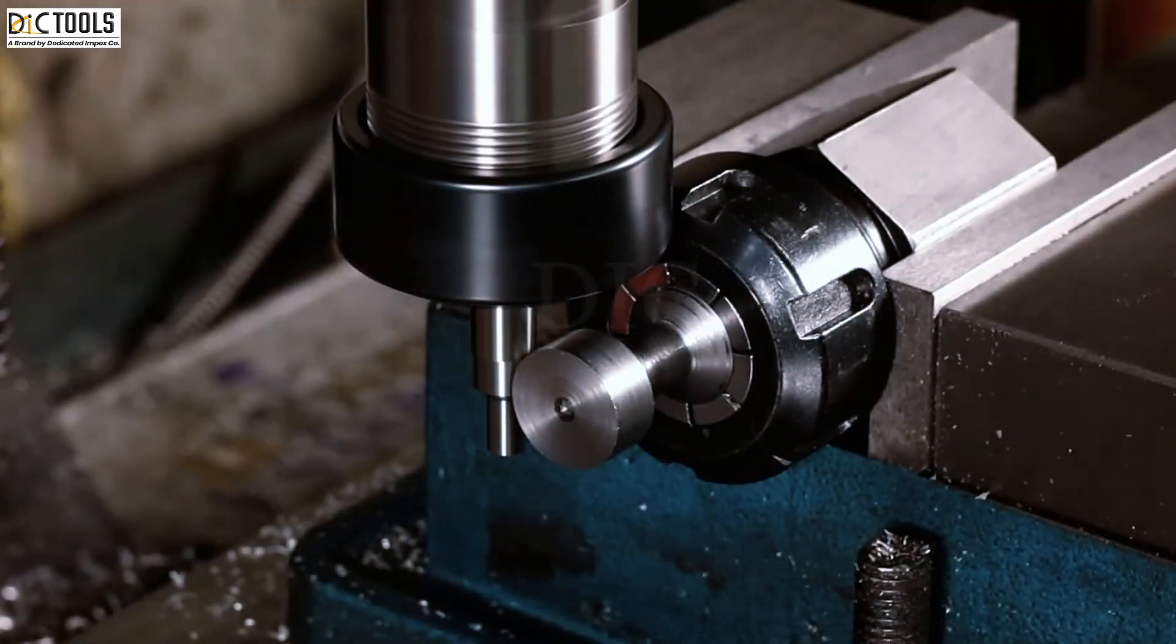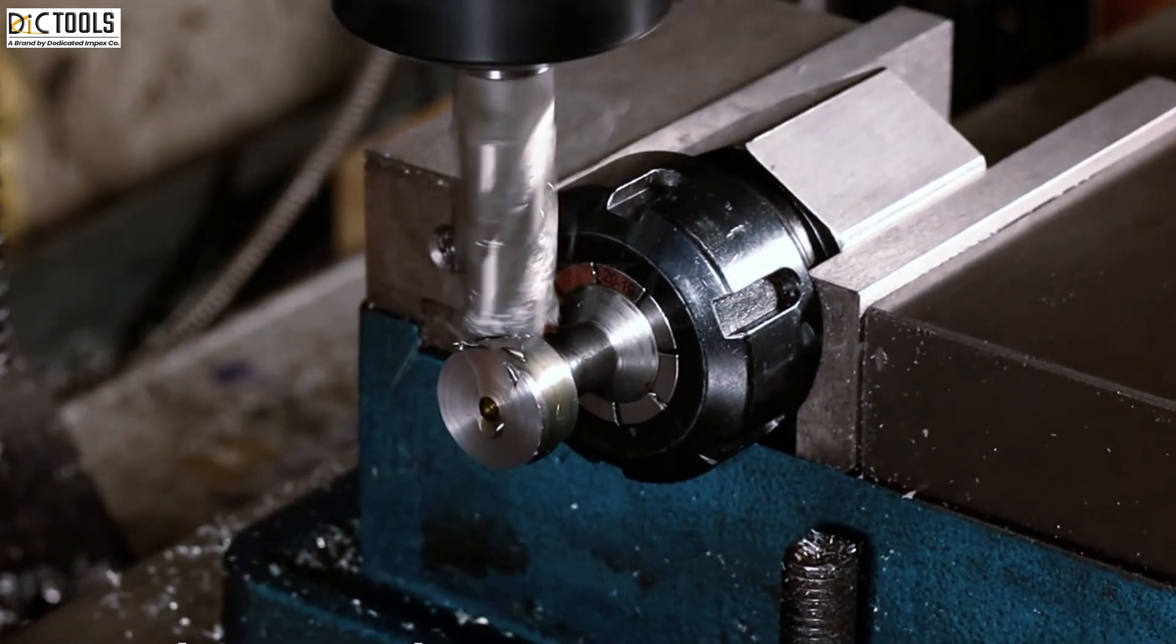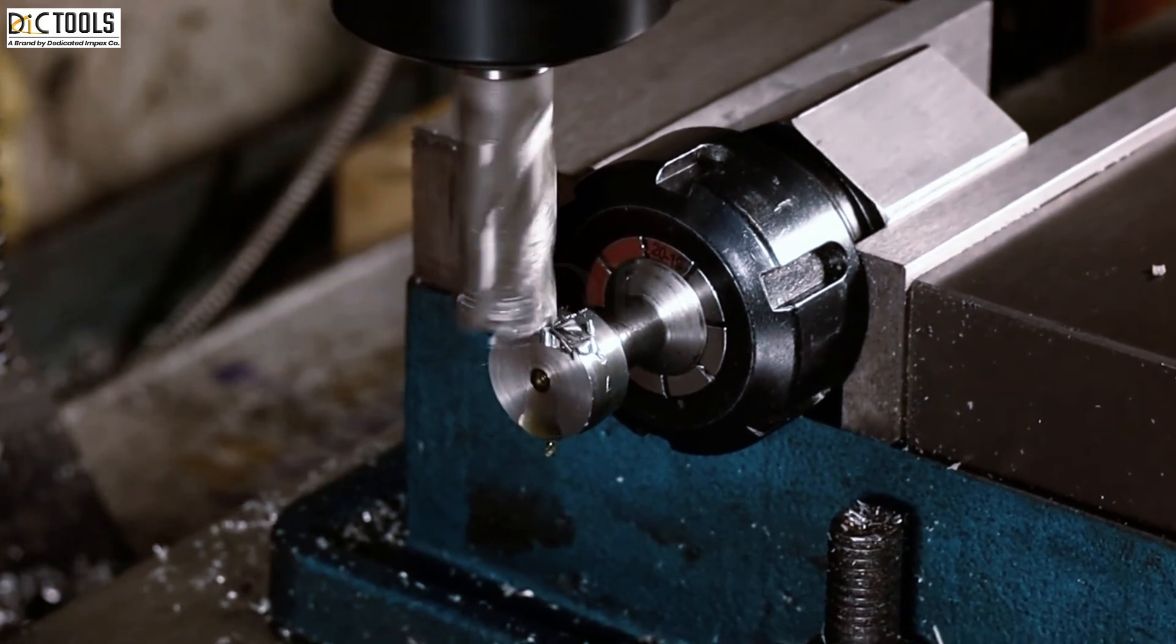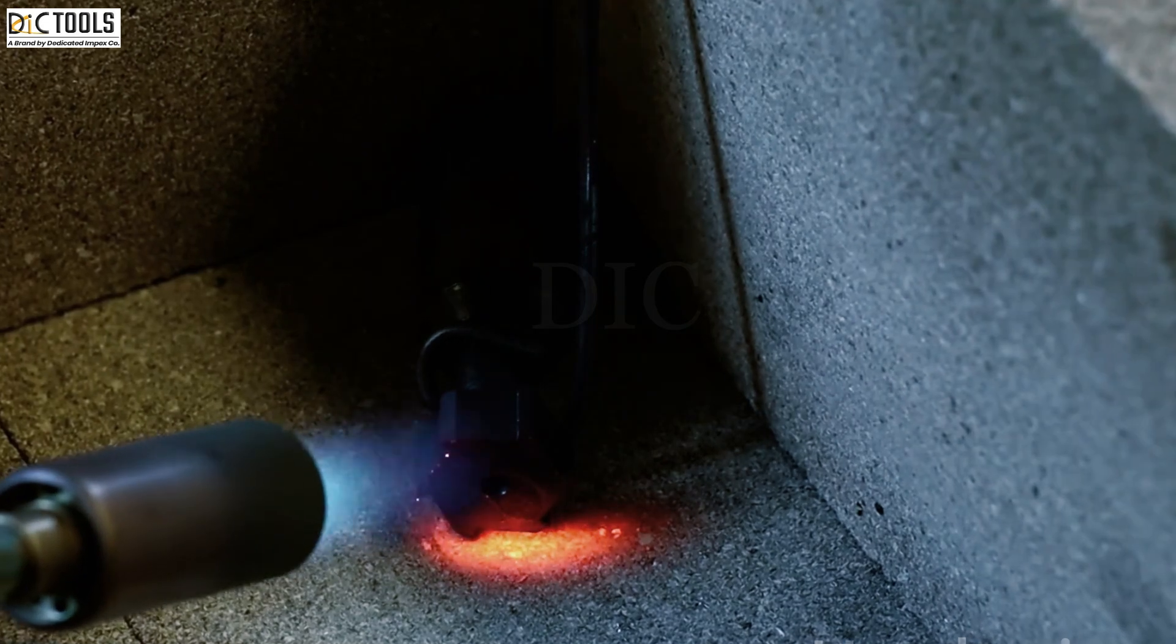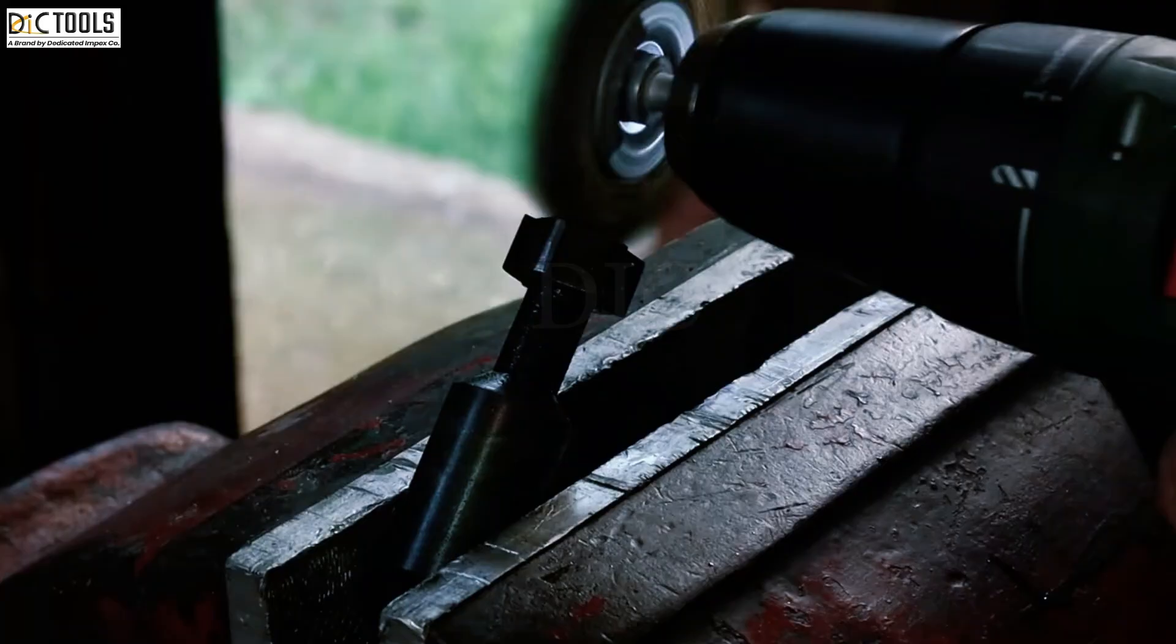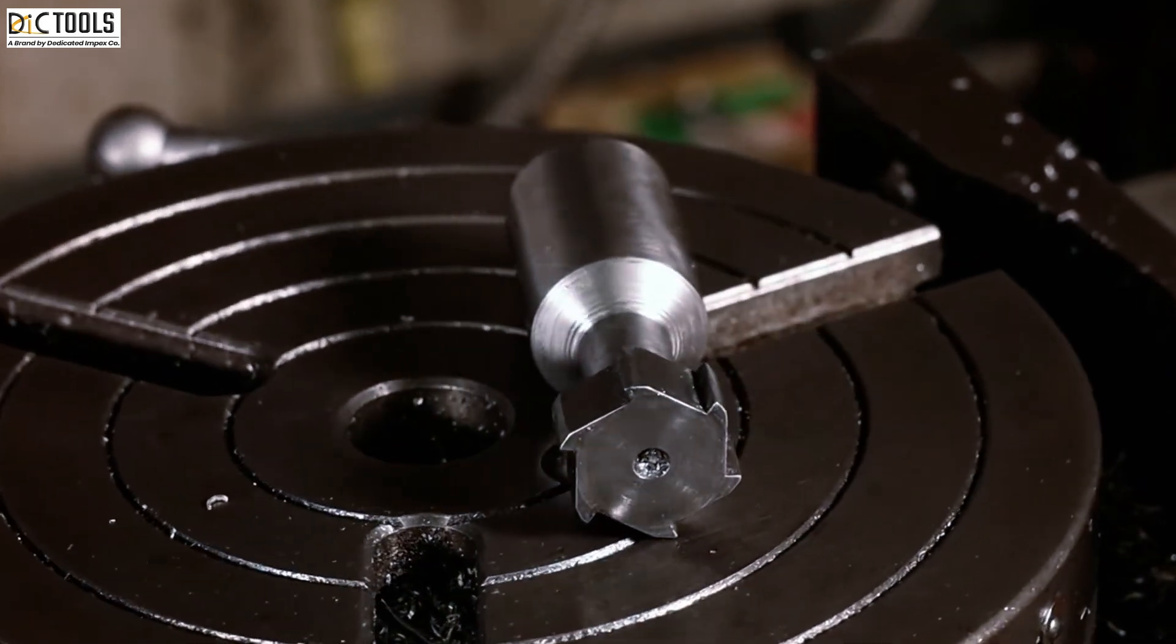After the cutter's basic shape is formed, it undergoes additional processes such as sharpening the cutting edges and applying coatings to enhance durability and performance. These coatings may include TiN or TiCN, which provide resistance to wear and heat during cutting operations.